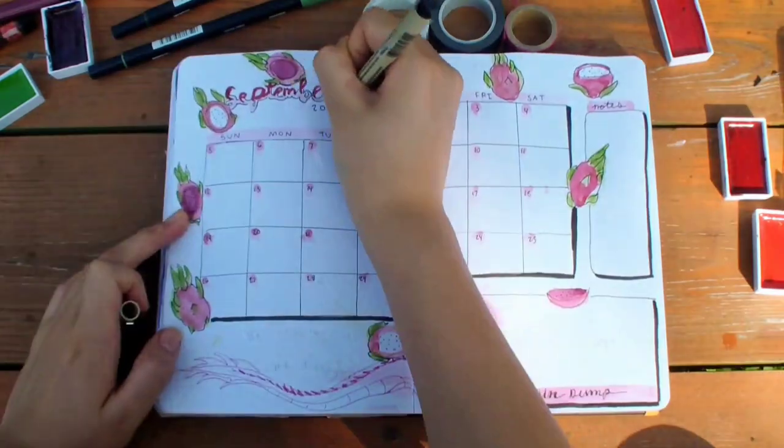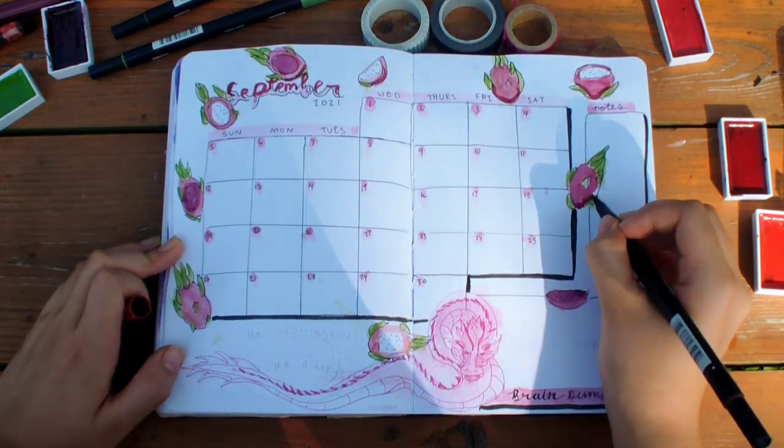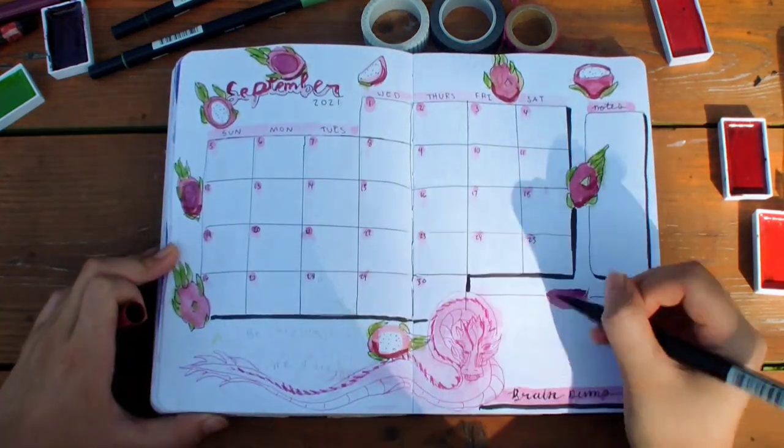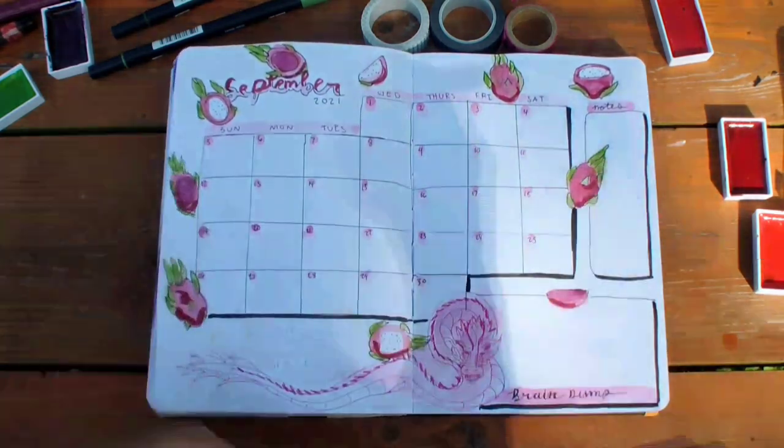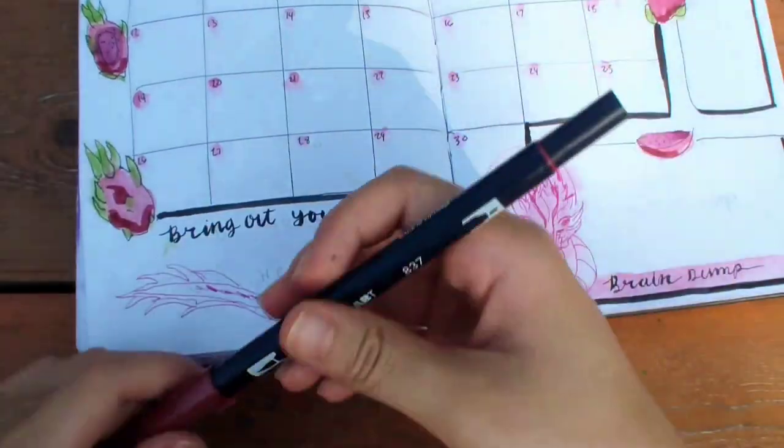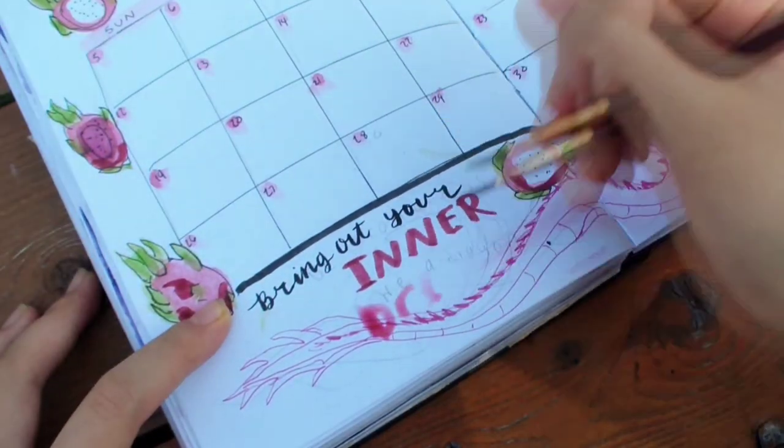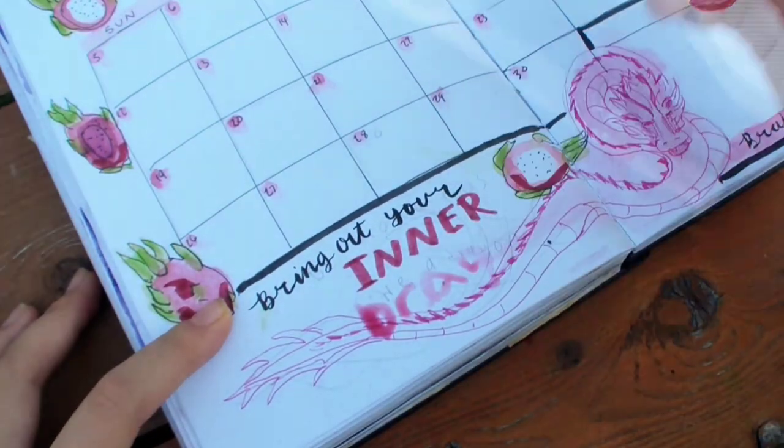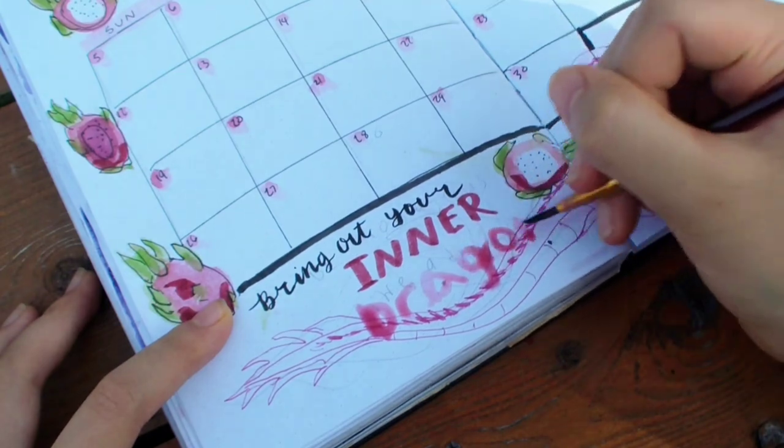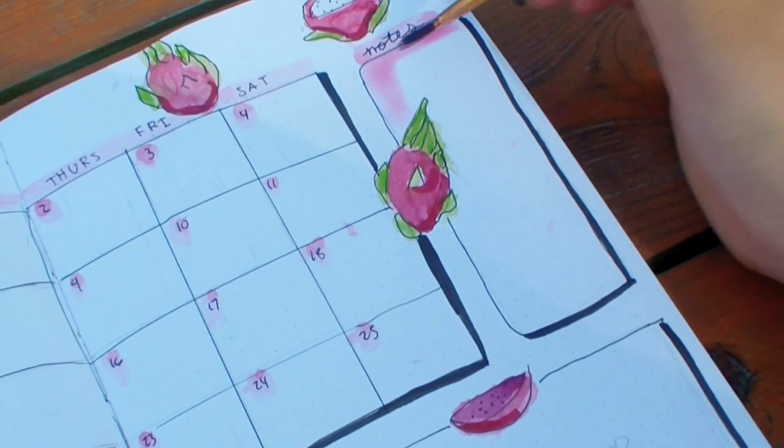Now I'm writing all of the dates. And I'm using a little bit of marker to add some shadows to the dragon fruit. For the quote I'm writing, bring out your inner dragon. I really wanted to find a quote that related to the dragon fruit, but I couldn't really think of one, so I just made it related to the dragon. I wrote it using watercolors. I added some watercolor to the boxes to make it darker.